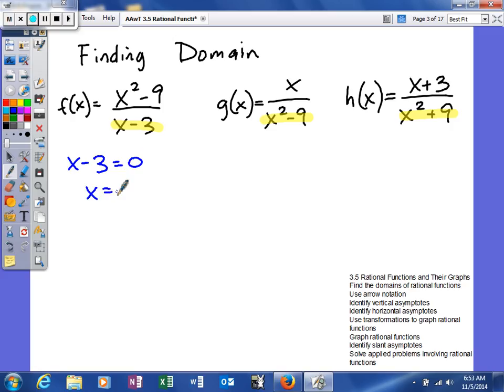So when you solve this, you'll get three. So our domain is going to be from negative infinity to three, and then from three to infinity. So again, nothing that we haven't done before.